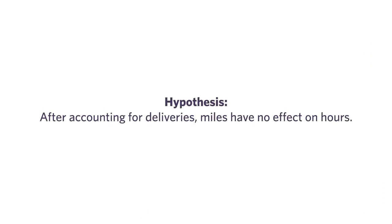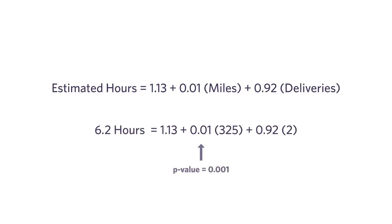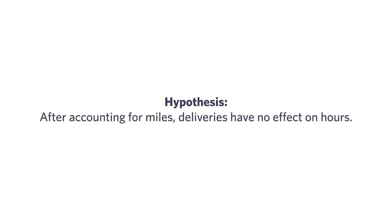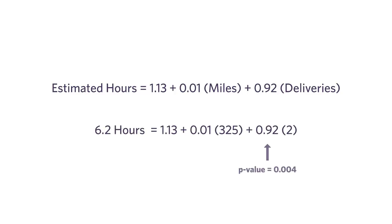We can turn now to the p-value. My walking-in hypothesis is: after accounting for deliveries, miles have no effect on hours. I look at the p-value that goes with my miles parameter and I see a very low p-value, meaning the data contradicts me. The data says there does appear to be a relationship between miles and hours, even after filtering out the effect of deliveries. Similarly, my walking-in hypothesis is: after I account for miles, deliveries have no effect on hours. Again, I see a very low p-value, meaning there does appear to be a relationship between deliveries and hours.